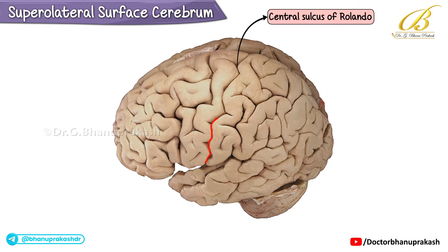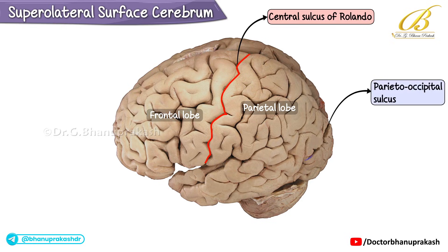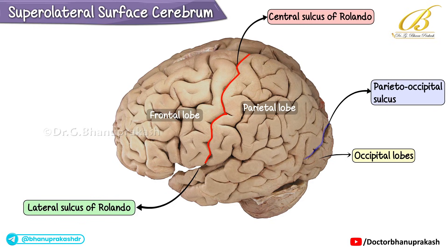The central sulcus of Rolando separates the parietal lobe from the frontal lobe. The parietal lobe extends posteriorly to the parieto-occipital sulcus, which demarcates the boundary between the parietal and occipital lobes. The lateral sulcus separates the frontal and parietal lobes from the temporal lobe located below.